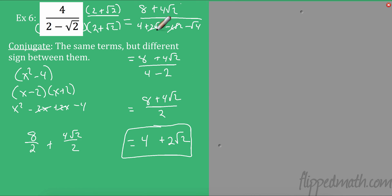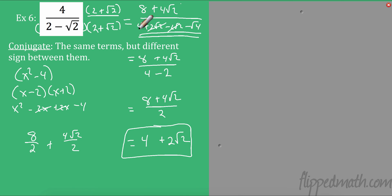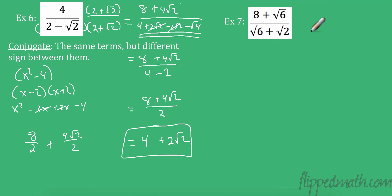Here's a shortcut. Multiplying out the bottom the long way is safest, but with the difference of squares pattern, you know the middle terms always cancel. So the bottom really just comes down to the first thing squared minus the second thing squared. For 2 minus radical 2: 2 squared is 4, radical 2 squared is radical 4, which is 2. So it's 4 minus 2, which equals 2. Now for the next example, I multiply by the conjugate. Since the denominator is radical 6 plus radical 2, the conjugate is radical 6 minus radical 2.